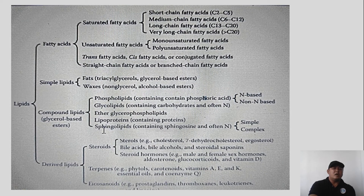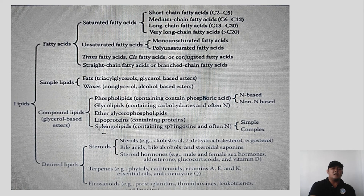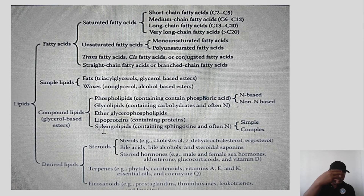Under fatty acids, we have saturated fatty acids and trans fatty acids or straight chain fatty acids. Under simple lipids are fats and waxes. Compound lipids contain phosphoric acid, carbohydrates, and often nitrogen and protein. Derived lipids include steroids, terpenes, and eicosanoids.